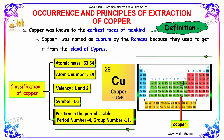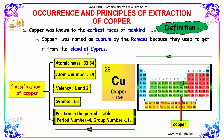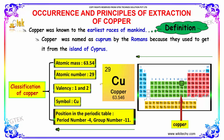Copper was known to the earliest races of mankind. Copper was named cuprum by the Romans because they used to get it from the island of Cyprus. Its atomic mass is 63.54, the atomic number is 29, and the valence is 1 and 2. The symbol of copper is Cu, and its position in the periodic table is the 11th group and period number 4.